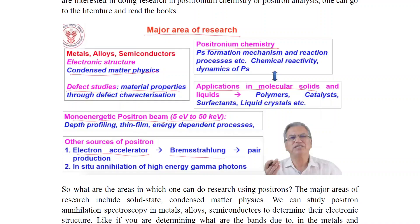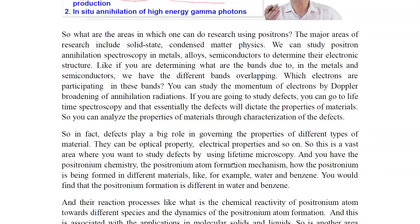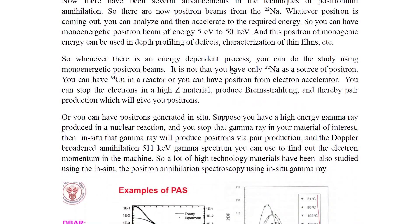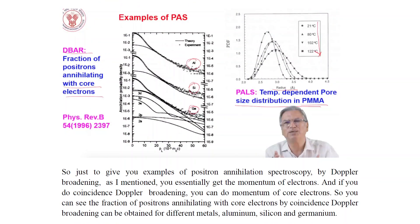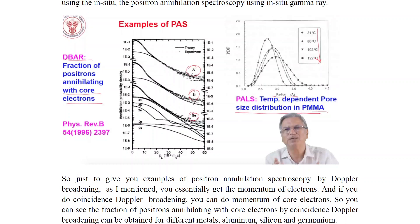Applications include molecular solids and liquids: polymers, catalysts, surfactants, and liquid crystals. A mono-energetic positron beam ranging from 5 eV to 50 keV is used for defect profiling of thin films and energy-dependent processes. Other positron sources include electron accelerator bremsstrahlung pair production and in-situ annihilation of high-energy gamma protons. An example is the DBAR fraction of positrons annihilating with core electrons.